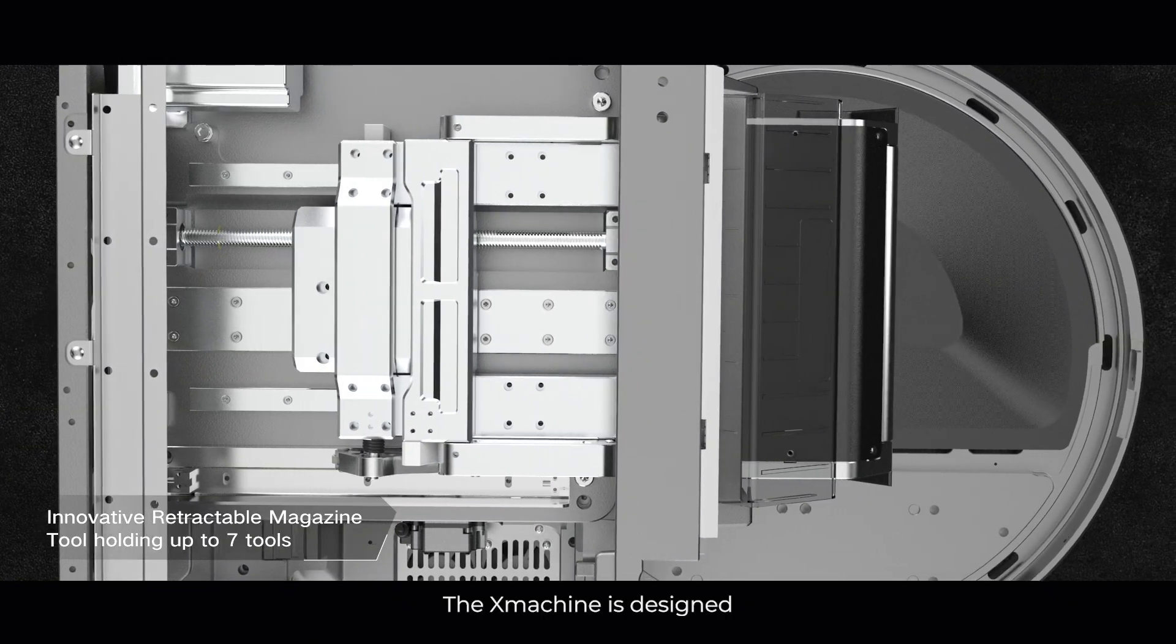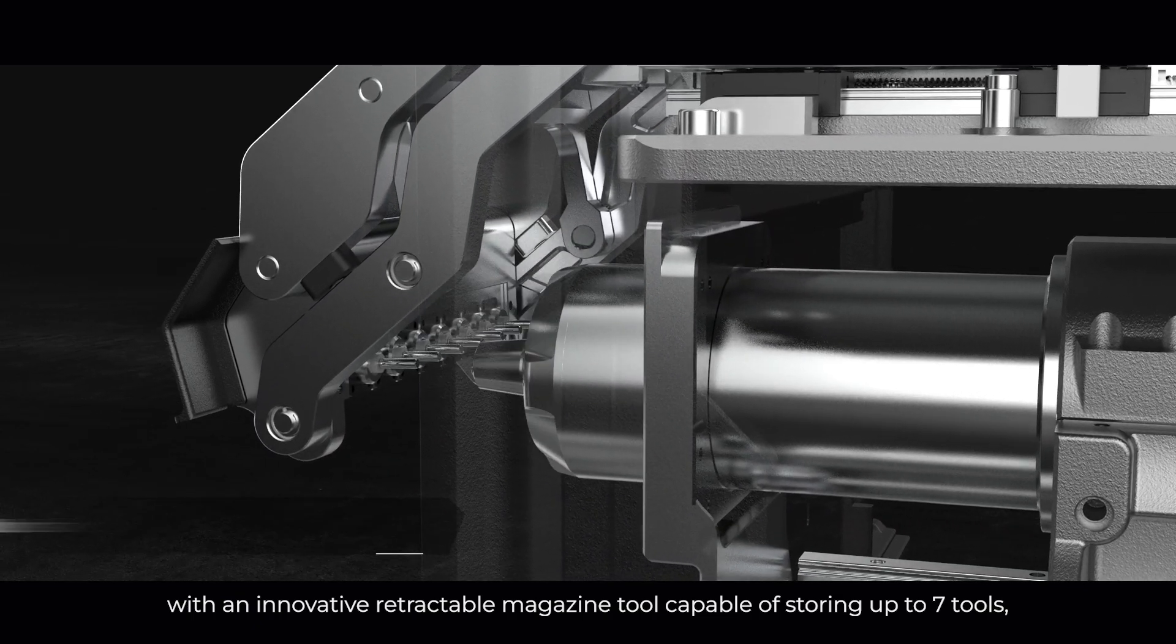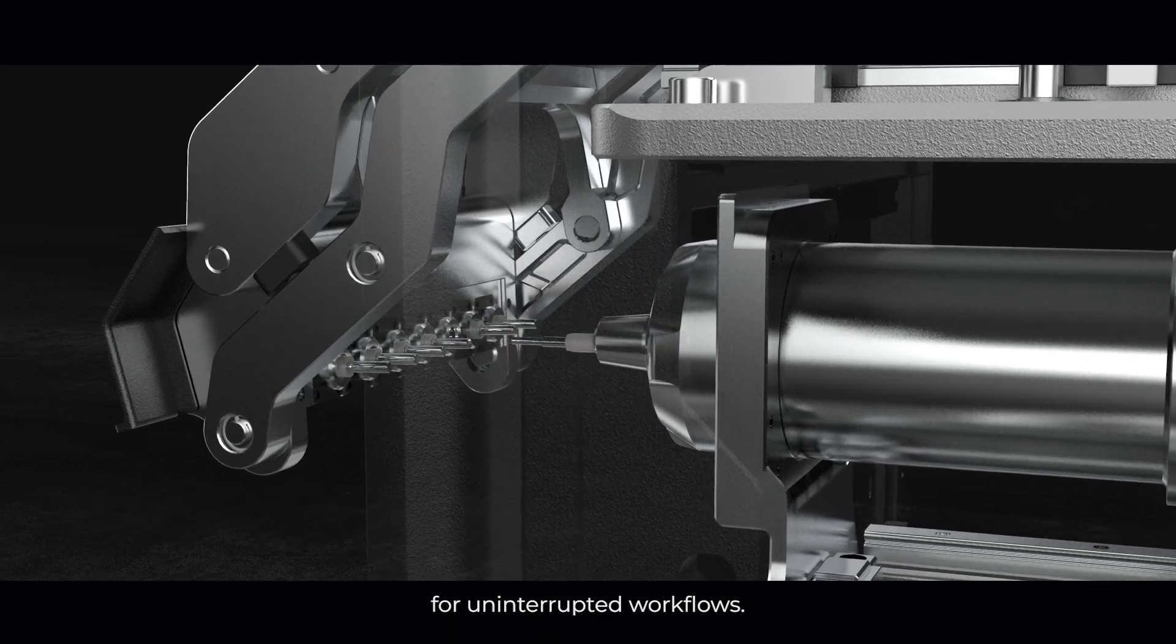The X-Machine is designed with an innovative retractable magazine tool capable of storing up to 7 tools, seamlessly integrated with a hidden automatic tool changer for uninterrupted workflows.